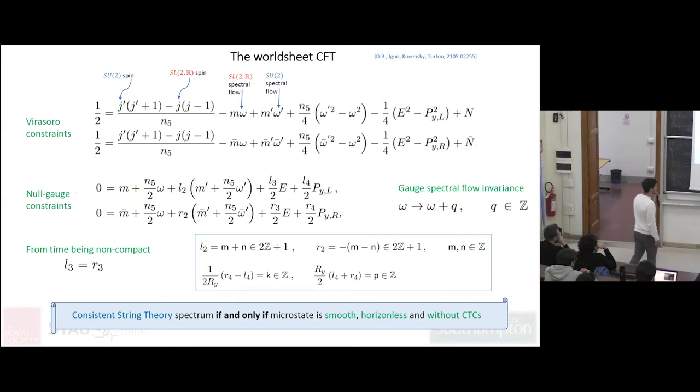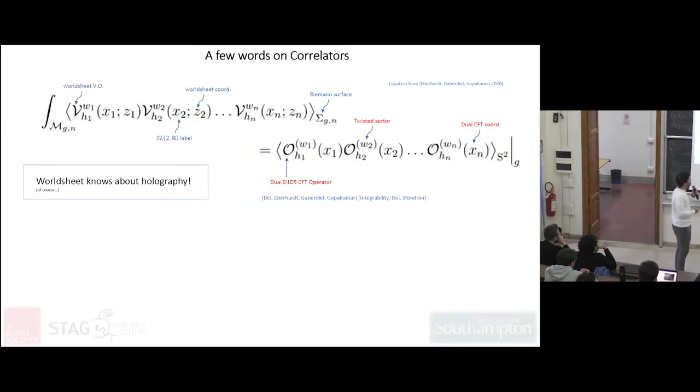Let me say what I'm going to hopefully publish next month is something about correlators in these geometries. We know the worldsheet knows about holography - some people in the audience know this extremely well and contributed to this. The way it works is that if you integrate this vertex operator, the correlators on the worldsheet, you get the dual D1-D5 CFT correlators.